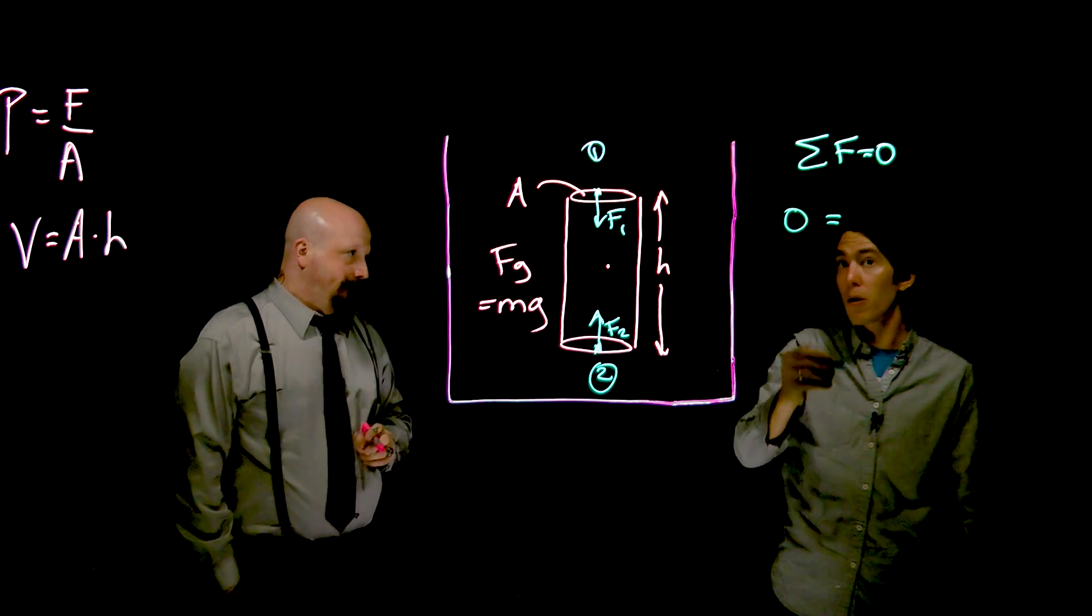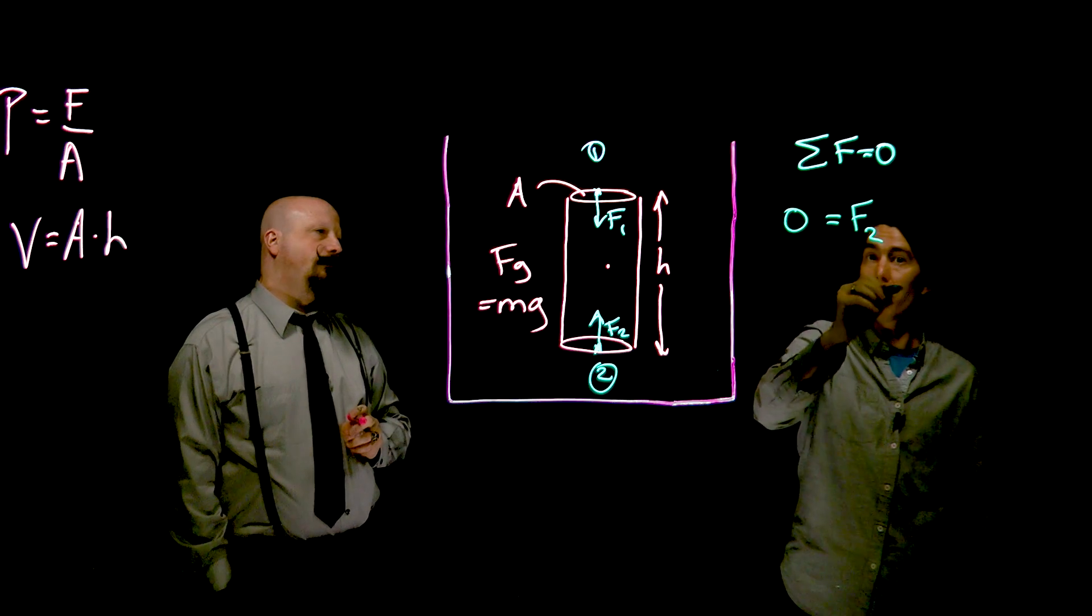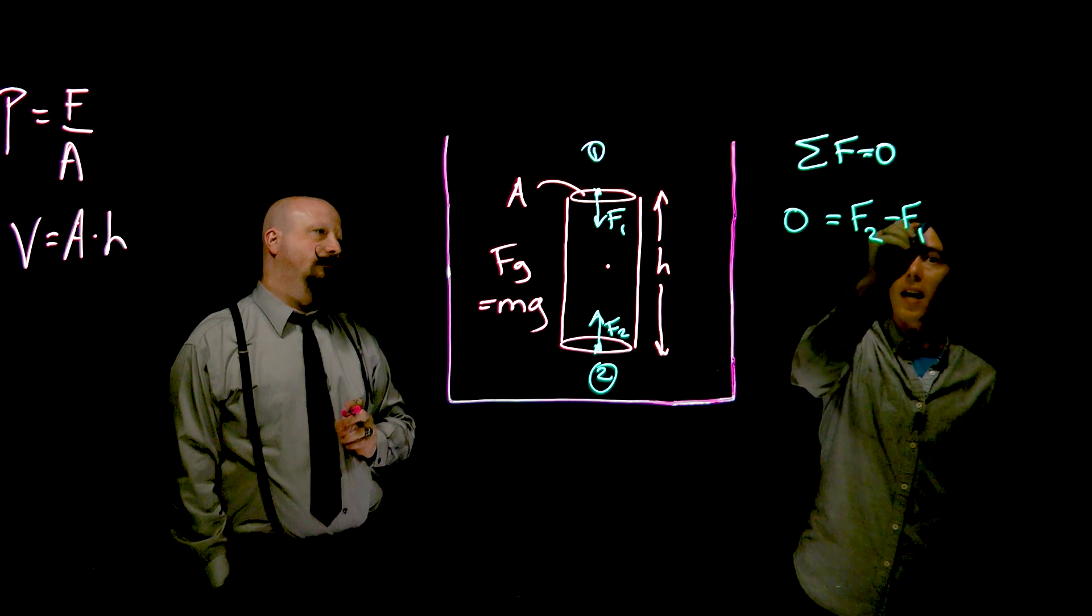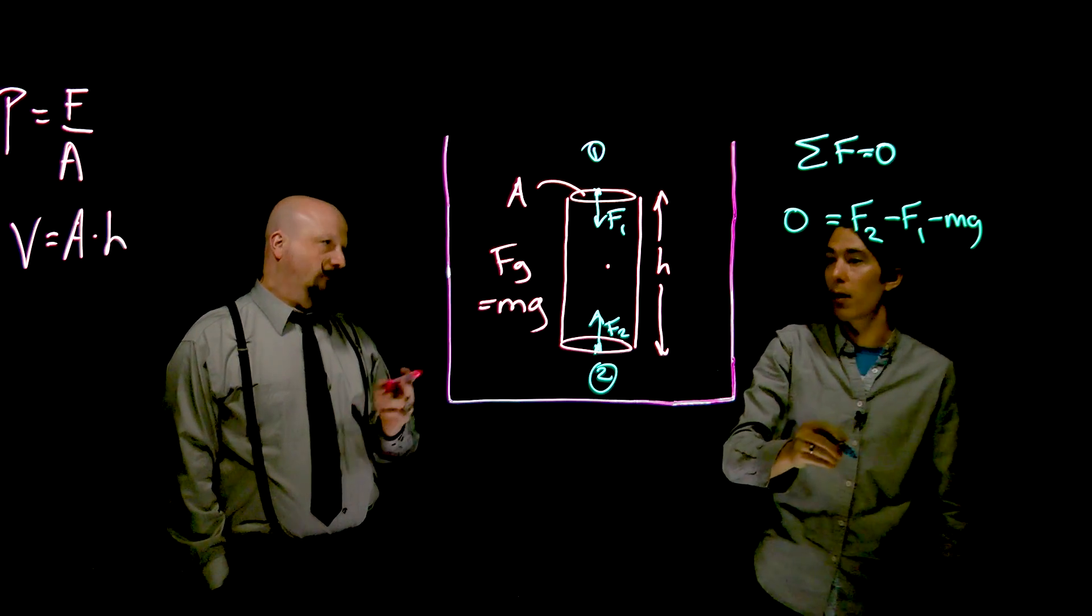All right. So the sum of the forces are zero. We've got F2 pushing upwards, F1 pushing downwards, and mg pushing downwards as well.